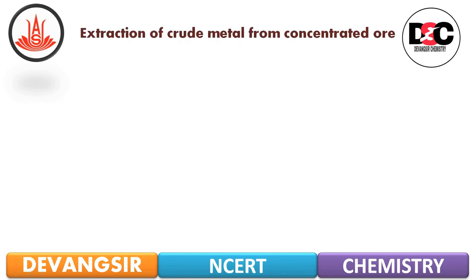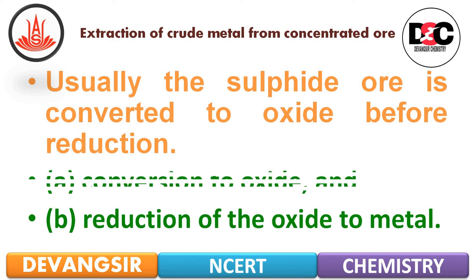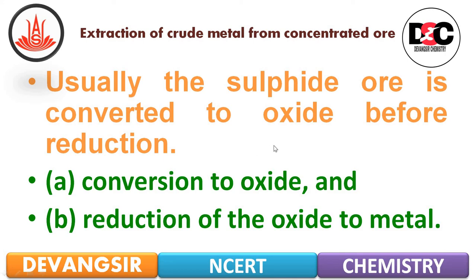Next is the extraction of crude metal from concentrated ore. Usually the sulphide ore is converted to oxide before reduction. There are two methods: (a) conversion to oxide, and (b) reduction of the oxide to metal.